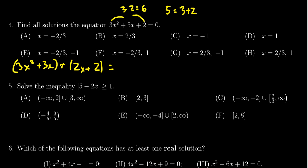So from the first group we can pull out a 3x that leaves behind x plus 1. From the second group we can pull out a 2 which leaves behind x plus 1 and so then finishing our factoring process we get 3x plus 2 and then we get x plus 1 is equal to 0.